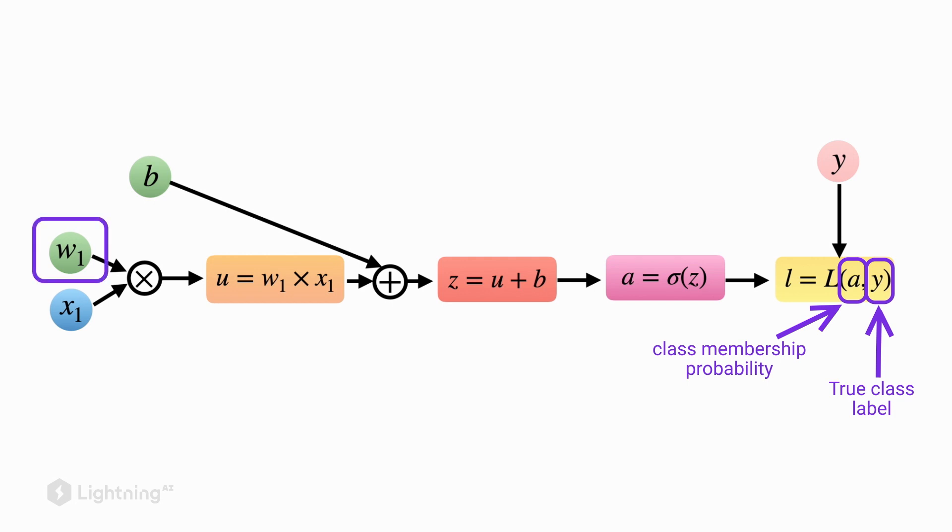Also keep in mind w1, the weight, and b, the bias unit, are the weight parameters that we want to update during the training.